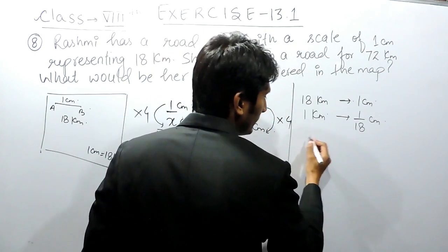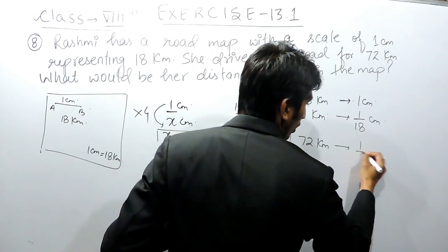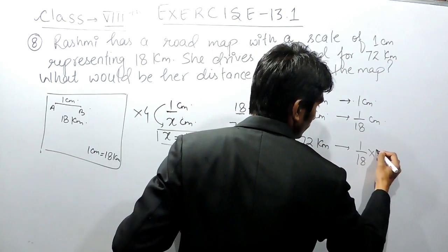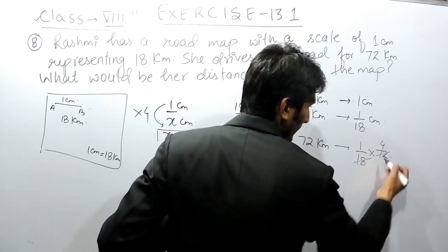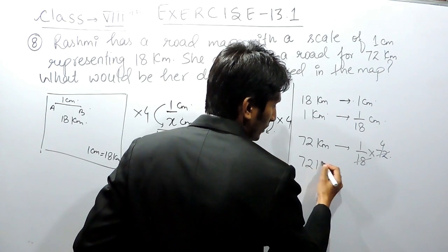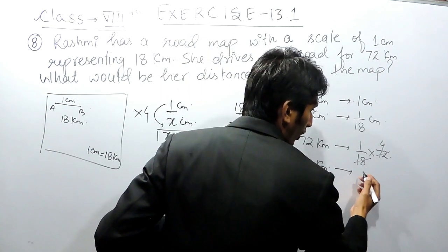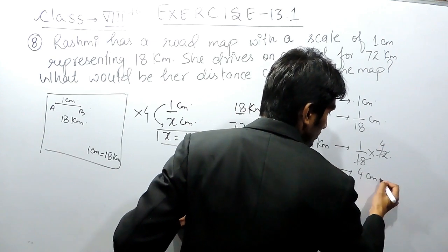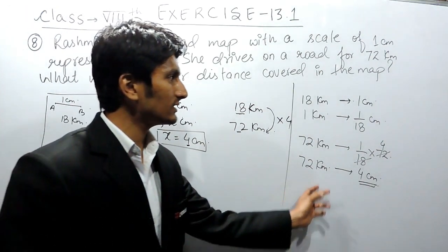Similarly, you have to find if she is traveling 72 kilometers, so on map it should be greater. This can be canceled 4 times. So we can say that on traveling 72 kilometers on actual ground, on map she has to travel 4 centimeters. This is another way of solving this.